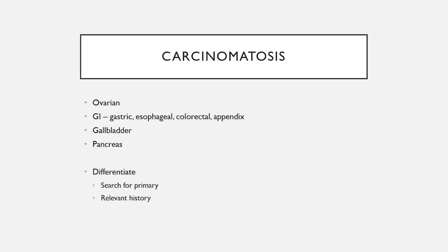When you see any findings of carcinomatosis, you need to search for the primary tumor — that's going to help tell you if this is metastatic disease or a primary tumor. You still will need pathologic confirmation, but a relevant history can be helpful. For example, did they have their ovaries out because of an ovarian cancer history? You can also look for the primary tumor itself — look at the gallbladder, the colon, and the pancreas to see if that's where it's originating from.